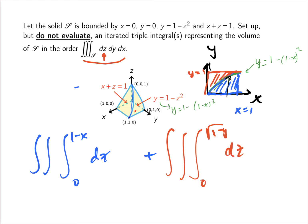Y goes from 0 to 1 minus (1 minus x)², and then x goes from 0 to 1.